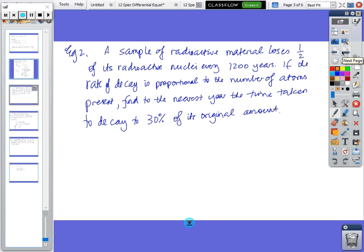Okay, next one. A sample of radioactive material loses half of its radioactive nuclei every 1200 years. So that's called the half life. If it's losing half, that's its half life. If the rate of decay is proportional to the number of atoms present, so it's a direct proportion,